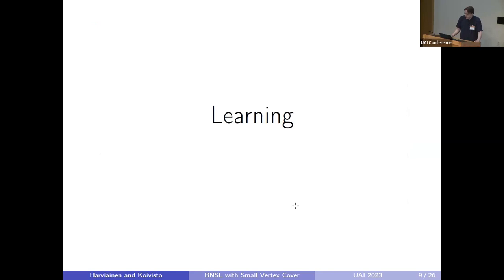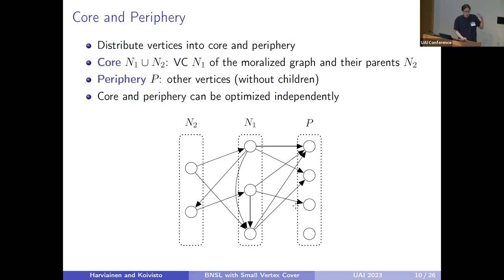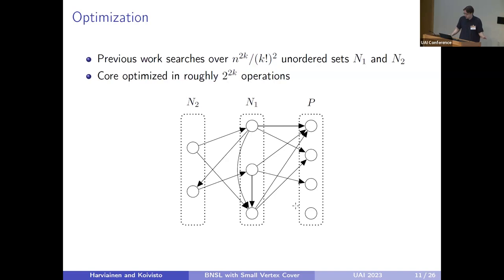Let's talk about the faster learning algorithm. The main idea behind Koronen and Parviainen's algorithm is that they distribute the vertices into two components: the core and the periphery. The core contains the vertex cover of the graph as well as the parents of that vertex cover. It should be observed that each vertex in the vertex cover can have at most one parent outside it, because otherwise these two vertices would share a child in the vertex cover and therefore we would add a moral edge between them. Then there's the periphery that contains the remaining vertices and they cannot have any children. The crucial observation here is that the core and the periphery can be optimized independently of each other.